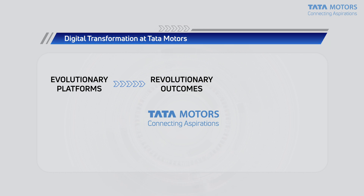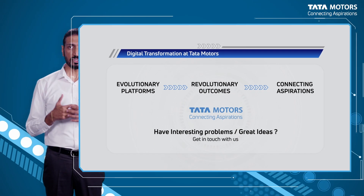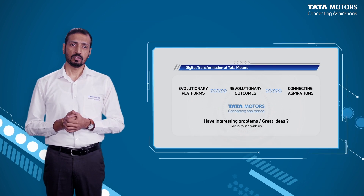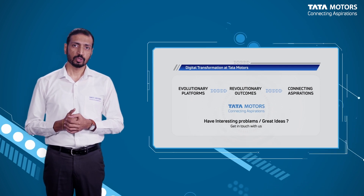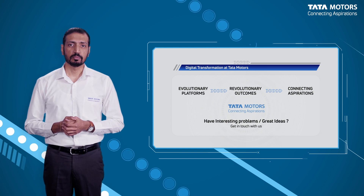We would like to use an evolutionary platform to drive revolutionary outcomes for our end customers. Ultimately, for my organization, it's all about connecting aspirations to our customers. Looking at the evolutionary approach of architecture driving revolutionary outcomes is all about delivering the aspirations of our customers, and we believe that with this type of approach we are meeting and exceeding those aspirations.